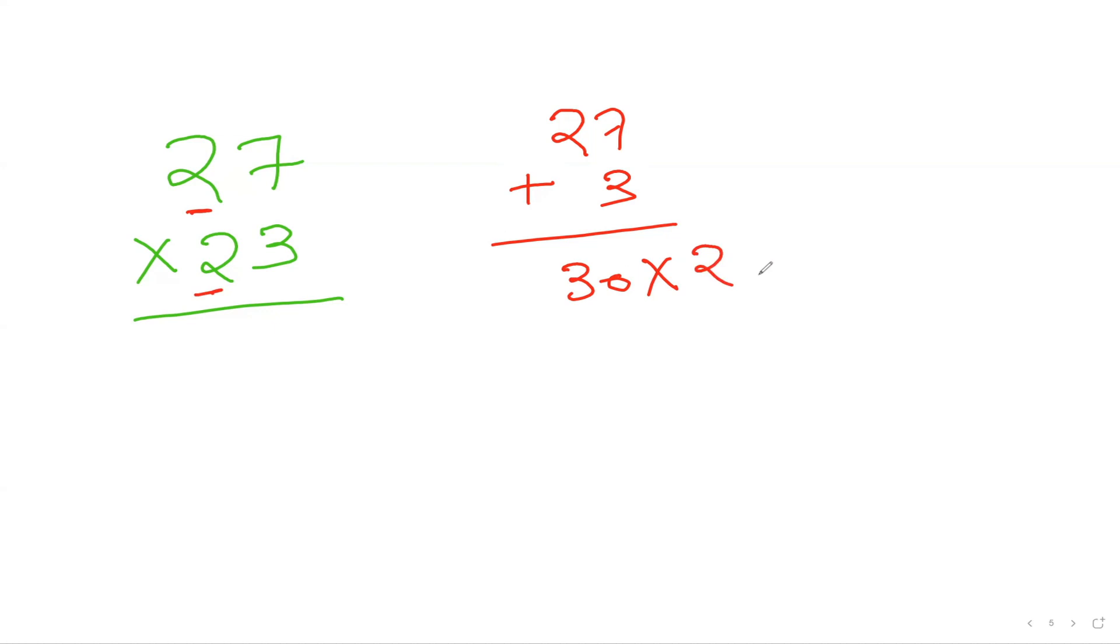So I can multiply with 2. 30 times 2 is going to be 60. Once I get that, I'm going to add extra zero into that.